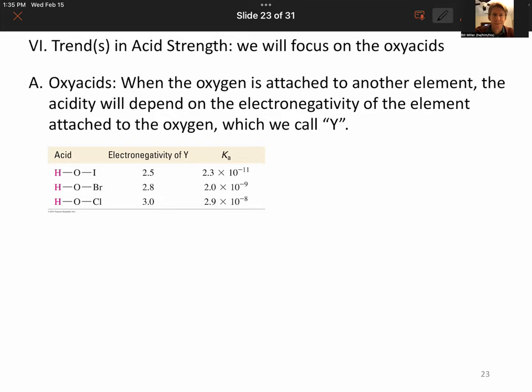These are going to be two trends in acid strength, and we will focus on the oxyacids. An oxyacid is when the oxygen is attached to another element. We're going to talk about how the acidity will depend on the electronegativity of the element attached to the oxygen, which we call Y.